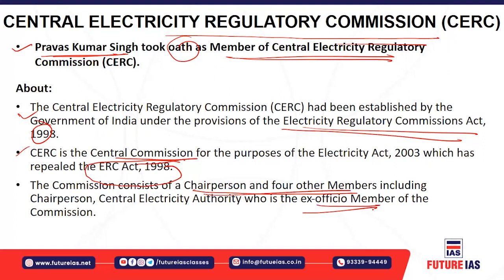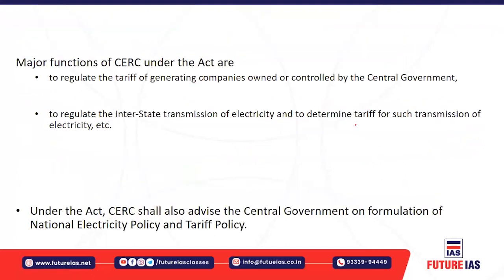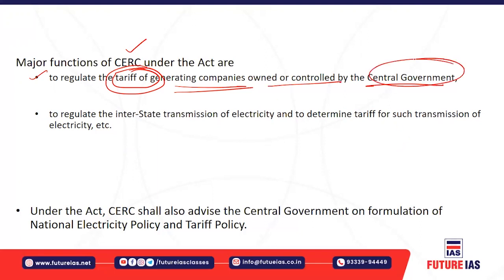The Central Electricity Regulatory Commission has a chairperson and four members, as well as an ex-officio member who is the Chairperson of the Central Electricity Authority. A major function of CERC is to regulate the tariff of generating companies — determining at what tariff electricity will be supplied to distribution companies, specifically for companies owned and controlled by the central government.